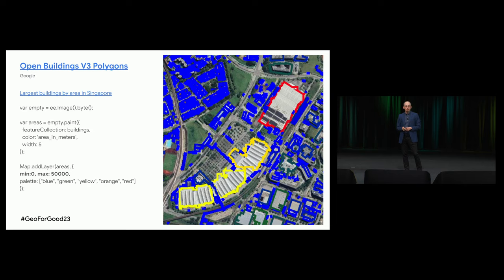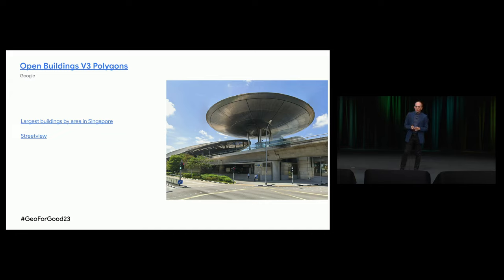The next dataset — Open Buildings polygons released by Google from internal data. It doesn't cover the whole world yet, but it does cover a lot. Looking at Singapore, let's find the biggest buildings by area, which is one of the polygon properties. Using MinMax, I quickly plotted the buildings — the red building is the widest one, yellow buildings are also very big. They're located on Expo Drive, and indeed these are Expo halls in Singapore. I also looked at the smallest buildings — I found a very small yellow building that turned out to be, I think, an elevator booth on a parking lot, confirmed via Street View.